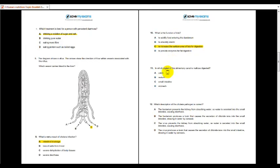Next, number 11, in which region of the elementary canal is maltose digested? Maltose is digested in the small intestine also. Number 12, which description of the cholera pathogen is correct? The bacterium prevents the kidney from absorbing water, so water is secreted into the small intestine causing diarrhea. The bacteria produce a toxin which causes secretion of chloride ions into small intestine drawing in water by osmosis. The virus prevents the kidney. Firstly, cholera is a type of bacteria. So C and D is totally wrong. So it's either A or B. Again, if you look, kidney prevents the kidney. Kidney is not related to the digestive system. So the answer is B.